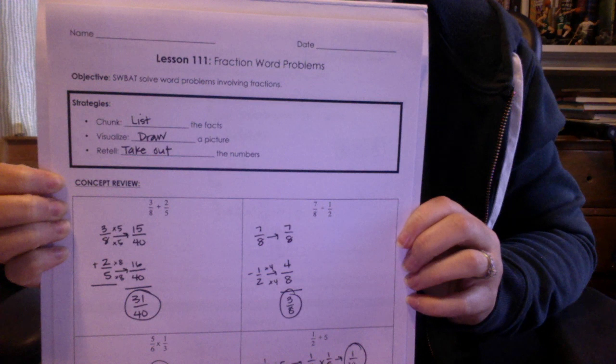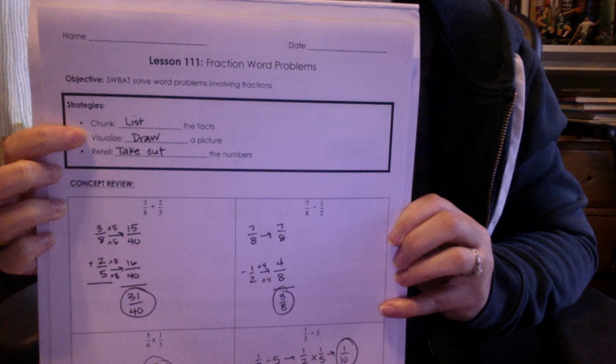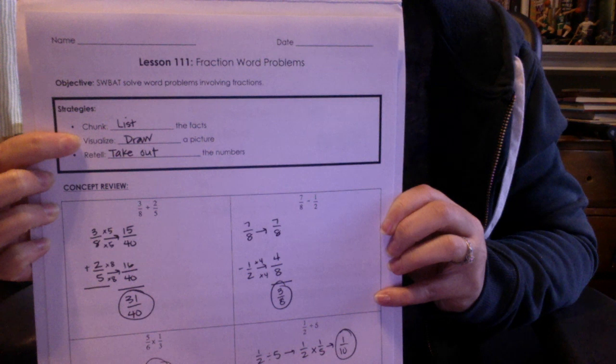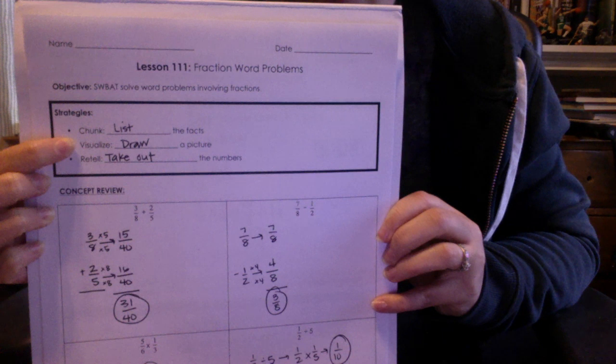Some reminders of strategies you can use for solving word problems. The first one is chunk the problem. What we mean by that is list out the facts. So if there are three bullet points or three numbers in the problem, you should have three bullet points and list out each fact. Second thing, visualize. It always helps to draw a picture, a simple bar diagram, something labeled, a table, something to help you visualize what's going on in the problem.